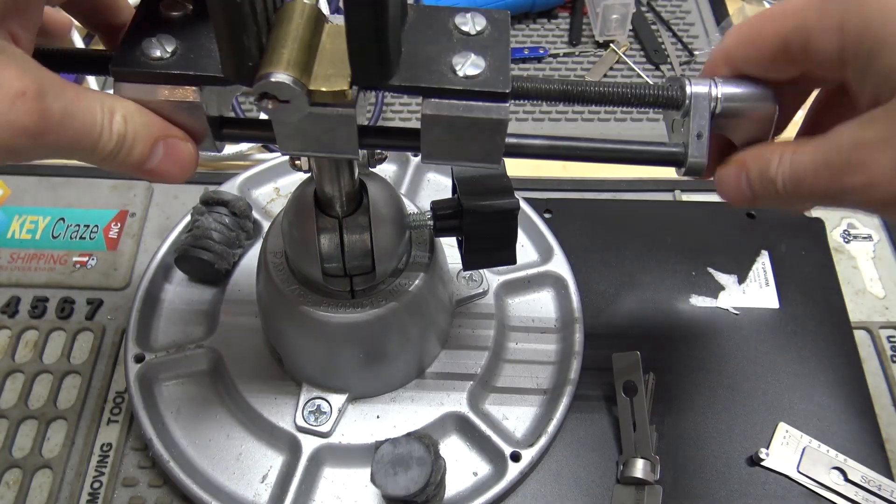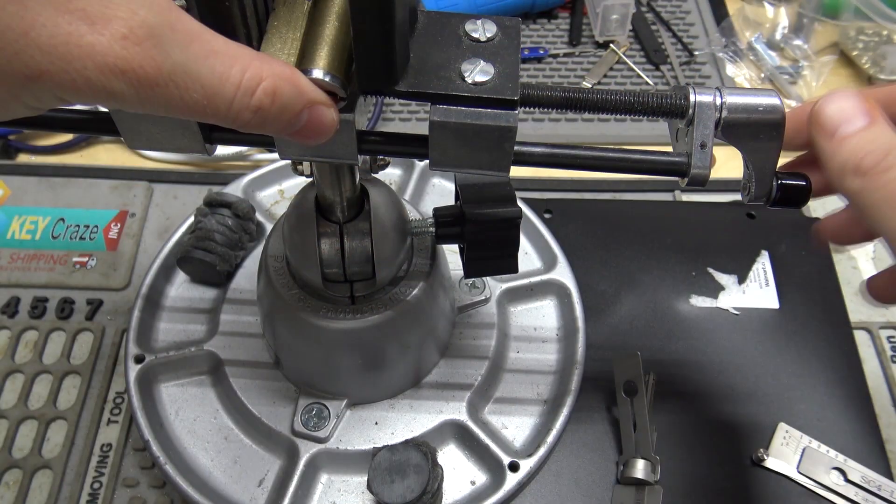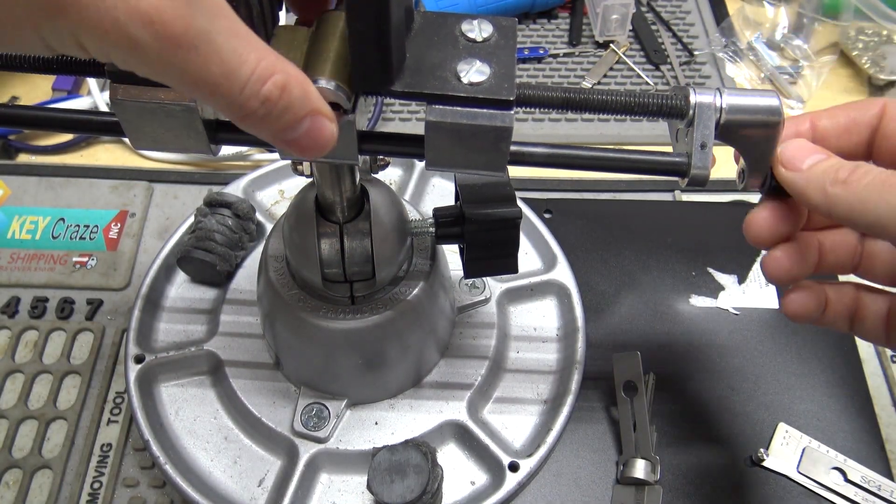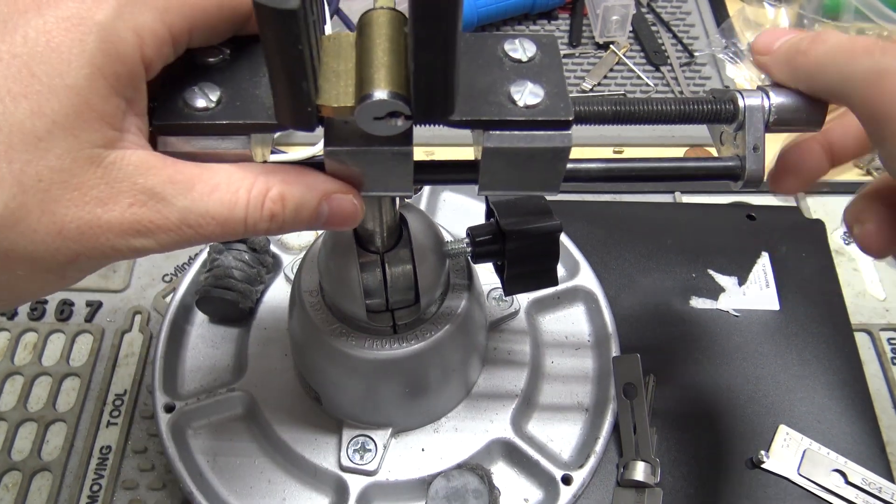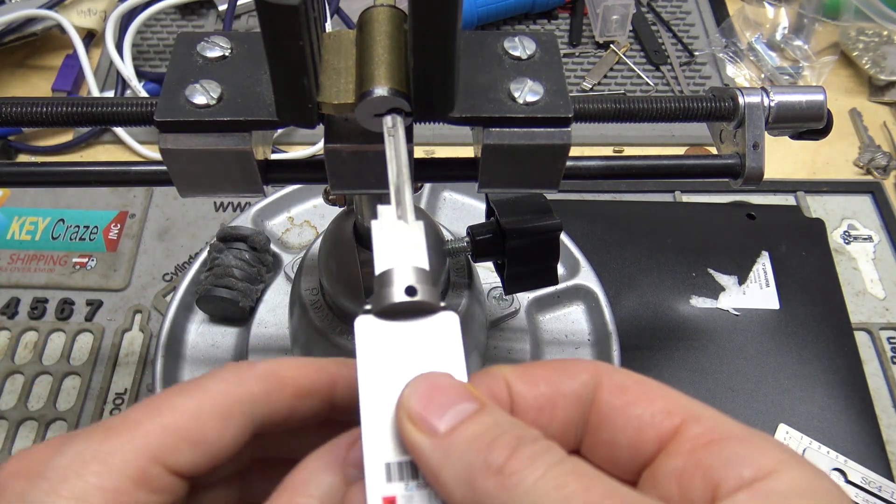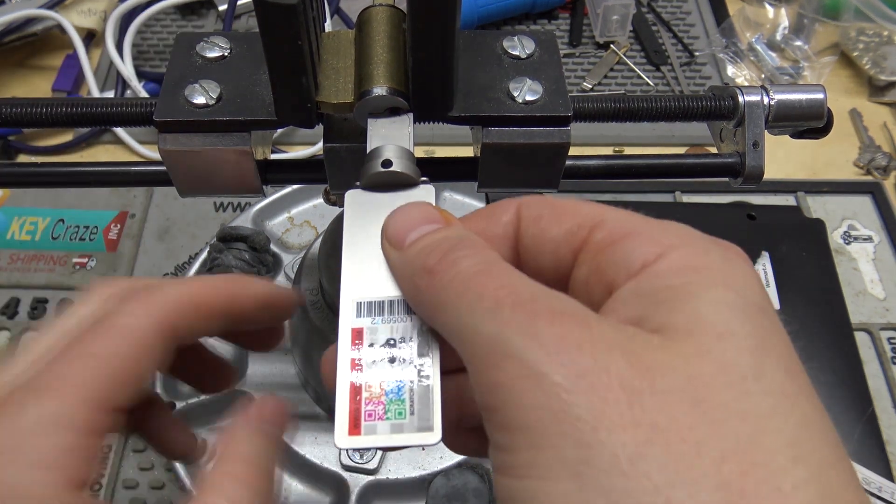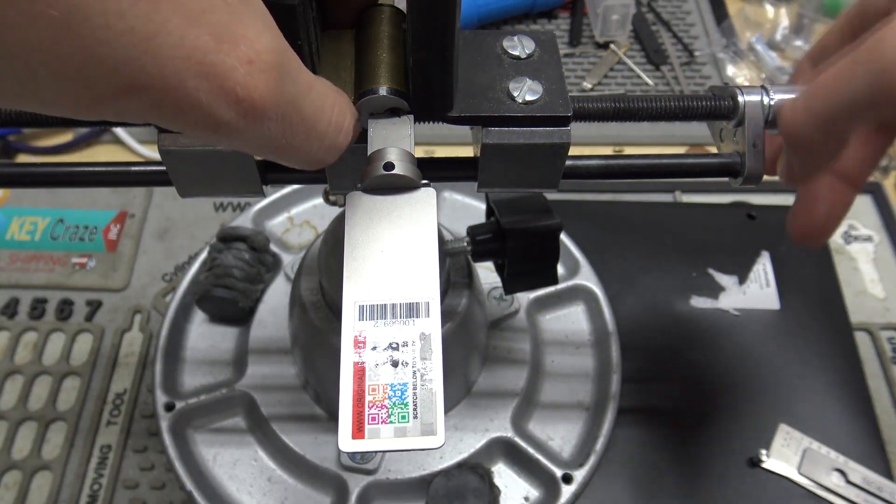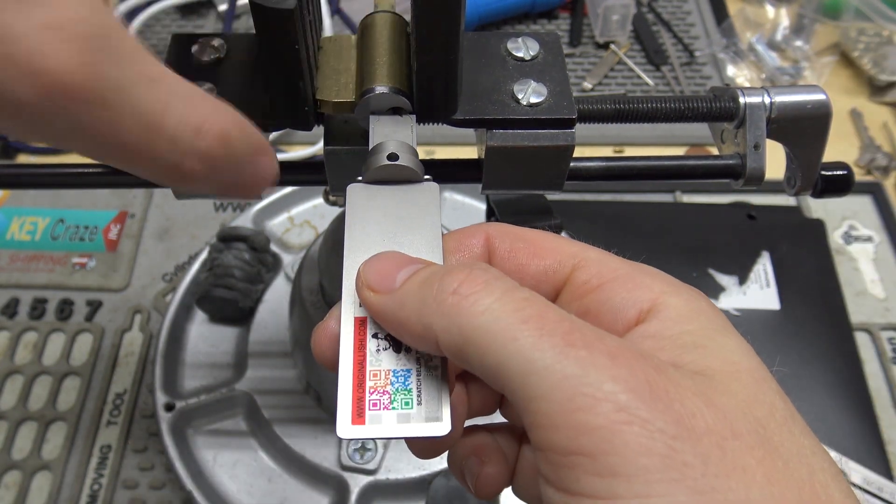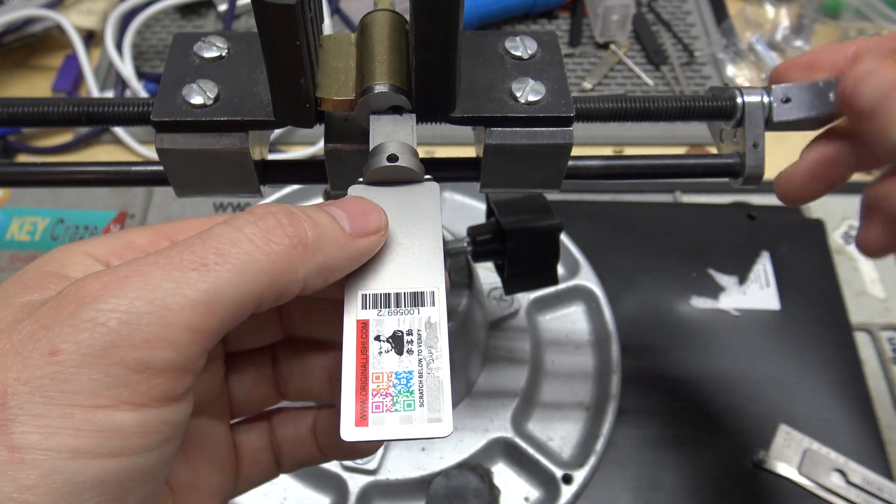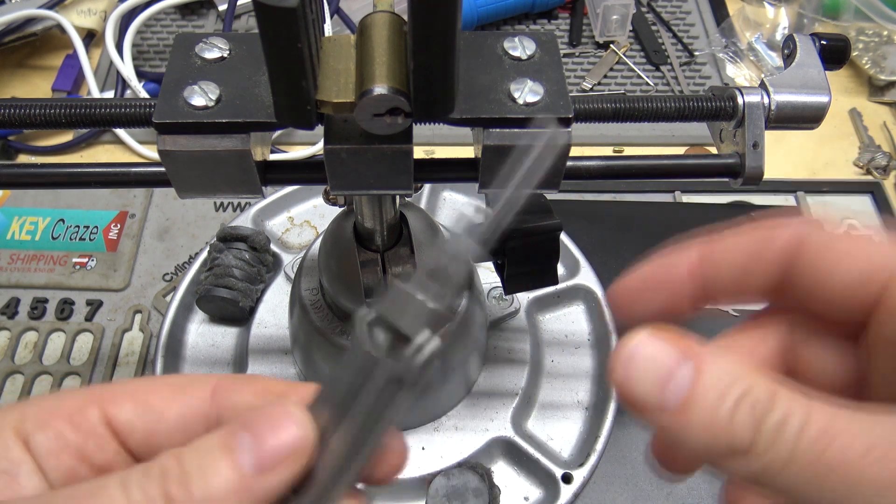Now the problem would come on the left-handed door. Your cylinder would wind up looking at you like this. And so we use the regular SC4 Lishi. Then you're having to get on your knees or something and get underneath it. And also your lifter is actually fighting gravity. So it makes them kind of difficult to pick. So that's where the SC4-L Lishi actually comes into play.